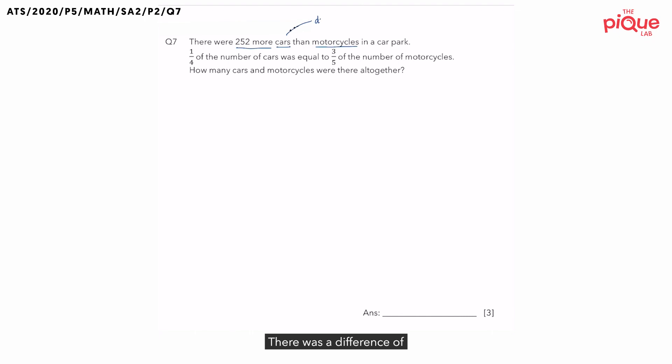There was a difference of 252 cars as compared to motorcycles. So let's just put this information here first. Difference is equal to 252.